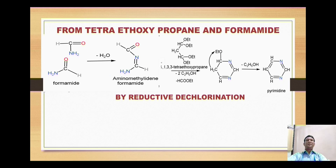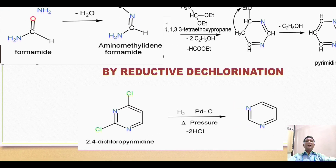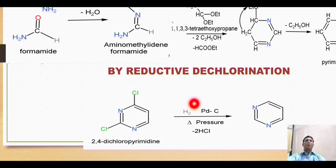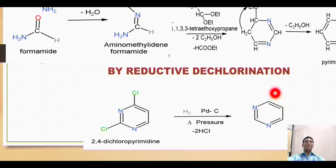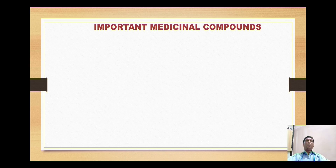The last synthesis is reductive dechlorination. It is a very simple reaction. The starting material is 2,4-dichloropyrimidine, which undergoes reduction in the presence of molecular hydrogen and palladized carbon under pressure. The two hydrogens and the two chlorines are released as two hydrochloric acid molecules, and thus the pyrimidine nucleus is generated.